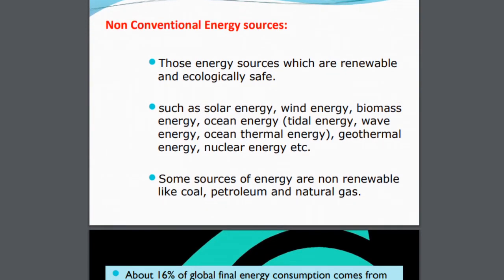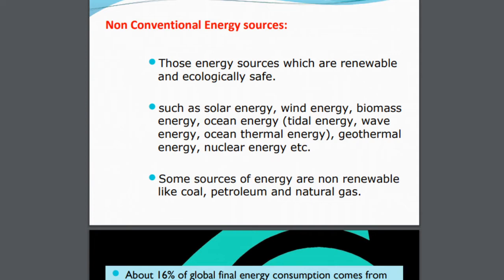First, what are these non-conventional energy resources? Those energy resources which are renewable and ecologically safe — that means these energy resources are not exhaustible. We can renew them, like running water, like solar rays, and they are ecologically safe like hydroelectric power. They do not cause too much pollution. Examples of such non-conventional sources of energy are solar energy from the sun, wind energy, biomass energy from gobar gas, ocean energy in the form of tidal energy, sea wave energies or ocean thermal energy.